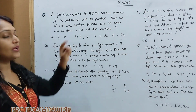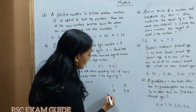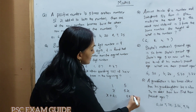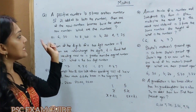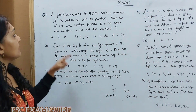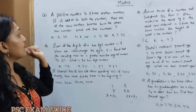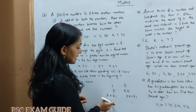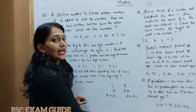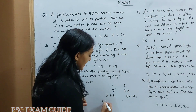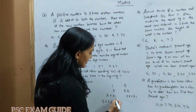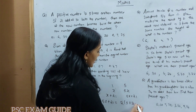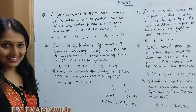If you add 21 to both numbers, then x becomes x plus 21 and 5x becomes 5x plus 21. The number will be 5x plus 21. This number will be 2 times x plus 21.